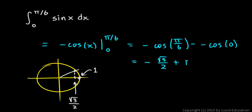If you wanted to, you could flip that around: 1 minus √3/2, but either way is correct.